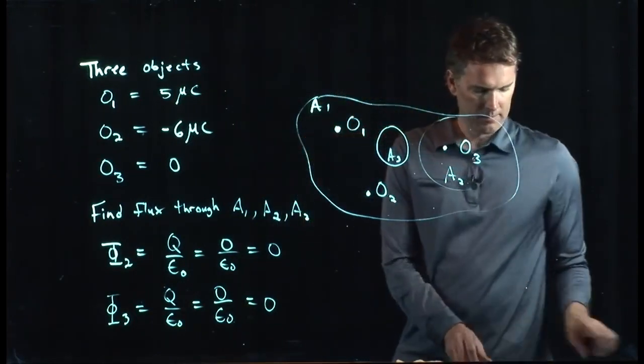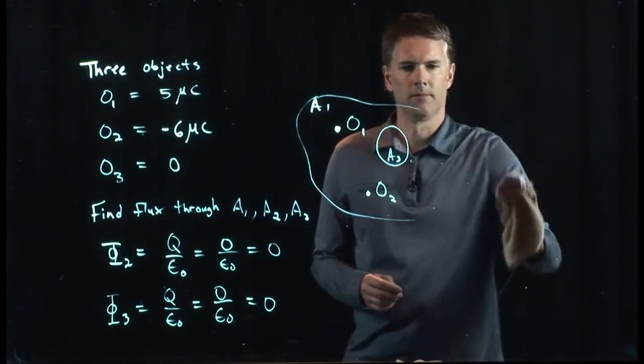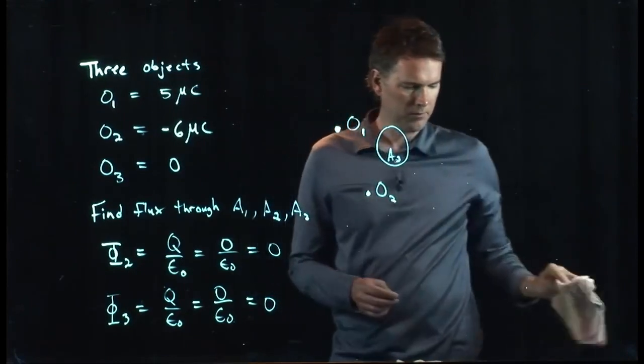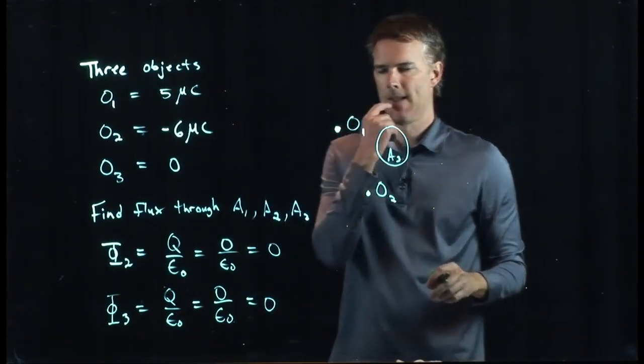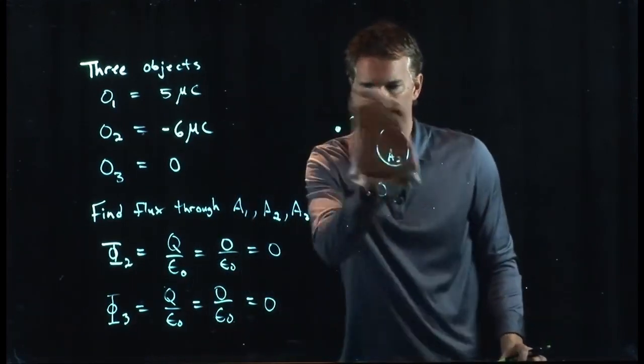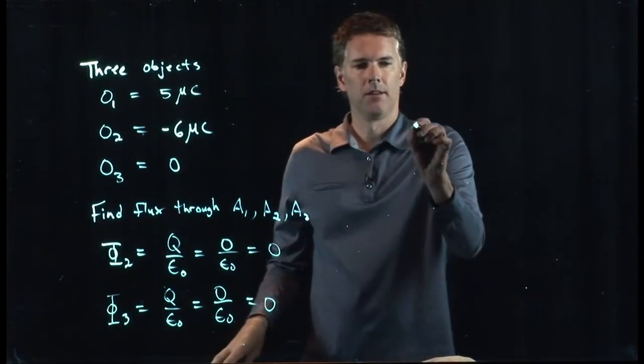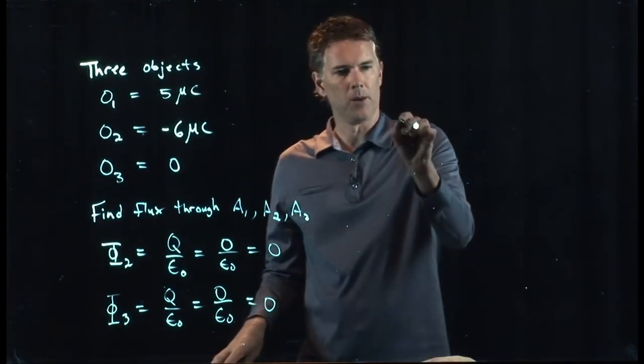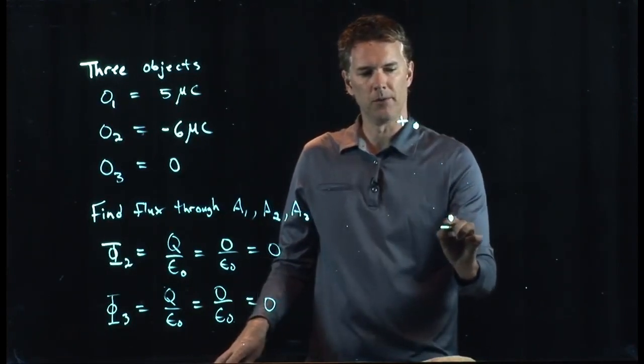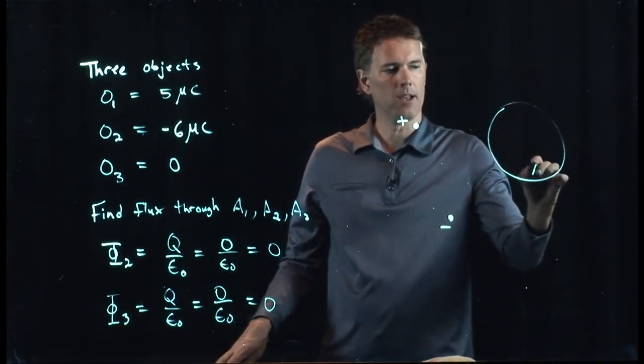Let's talk about that for a second. And let's ignore some of these other areas. Let's just worry about A3. A3 is sitting right there. Let's draw it a little bit bigger, and let's draw O1, which we said was a positive charge, O2, which we said was a negative charge, and here is our area, A3.